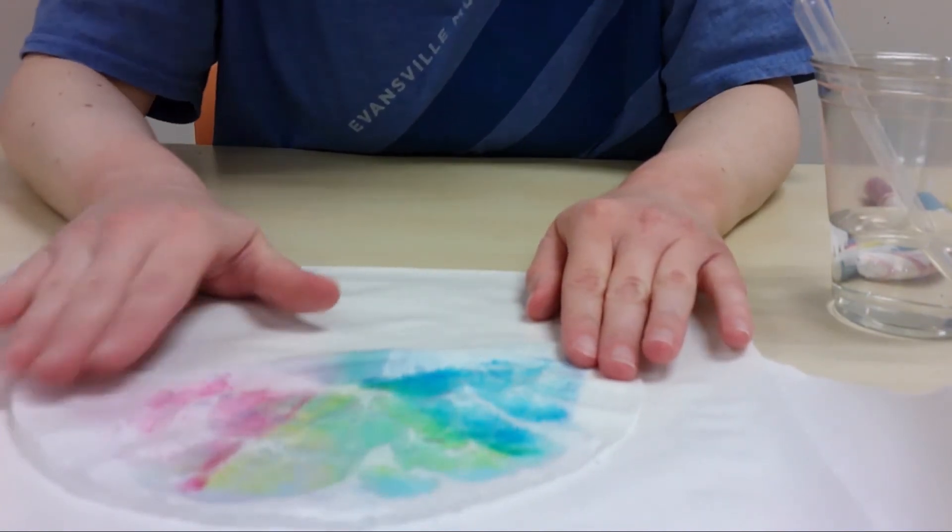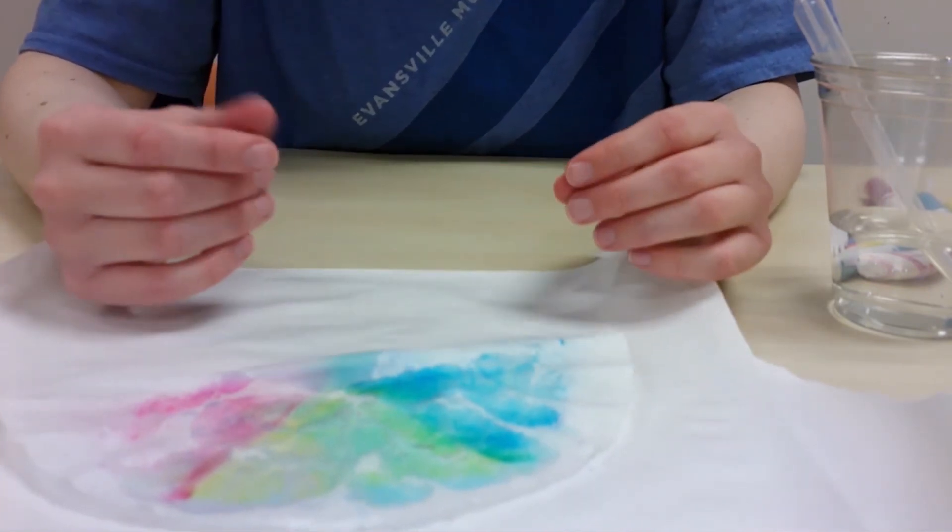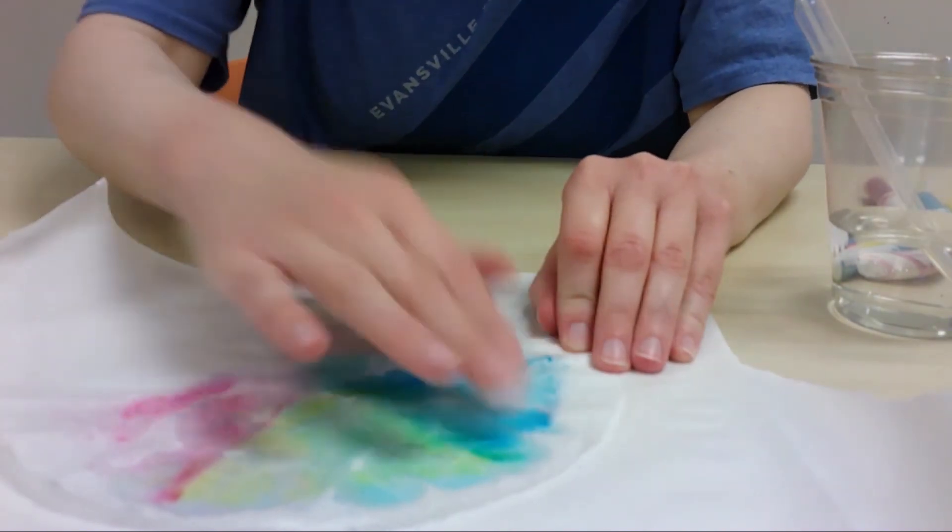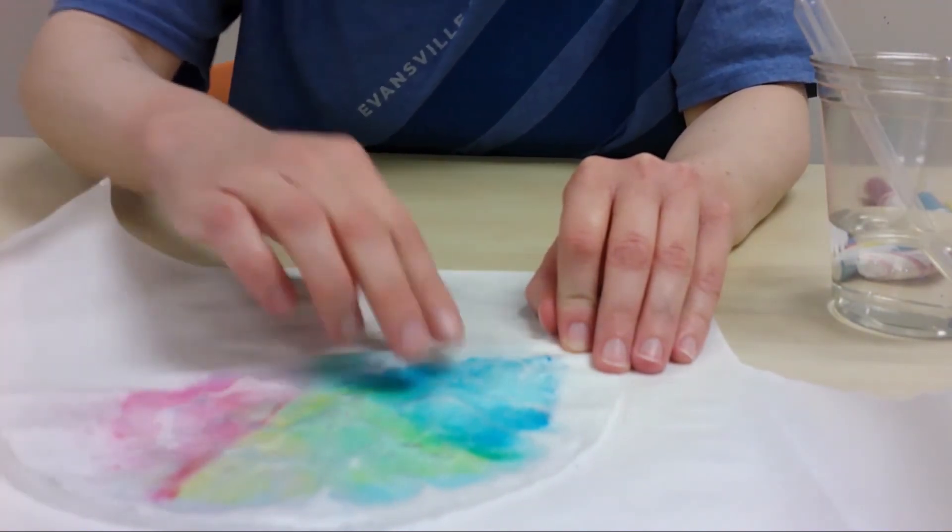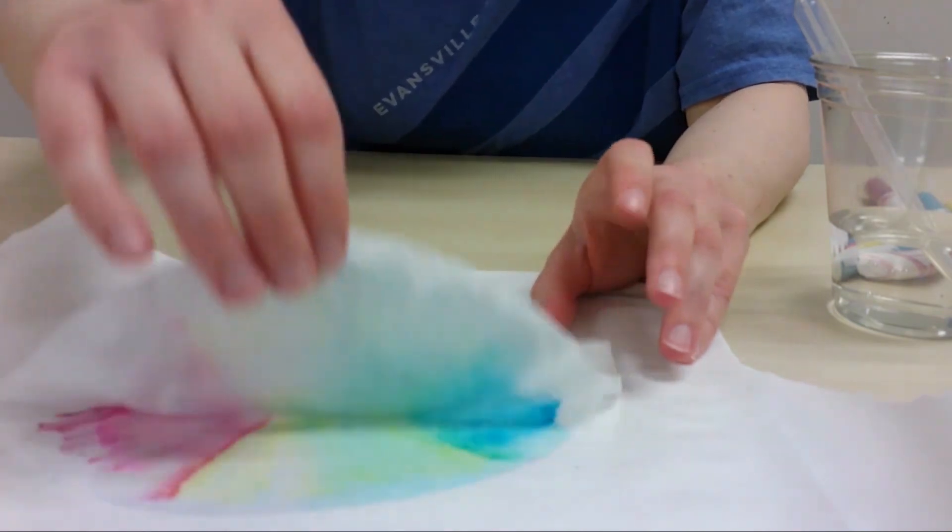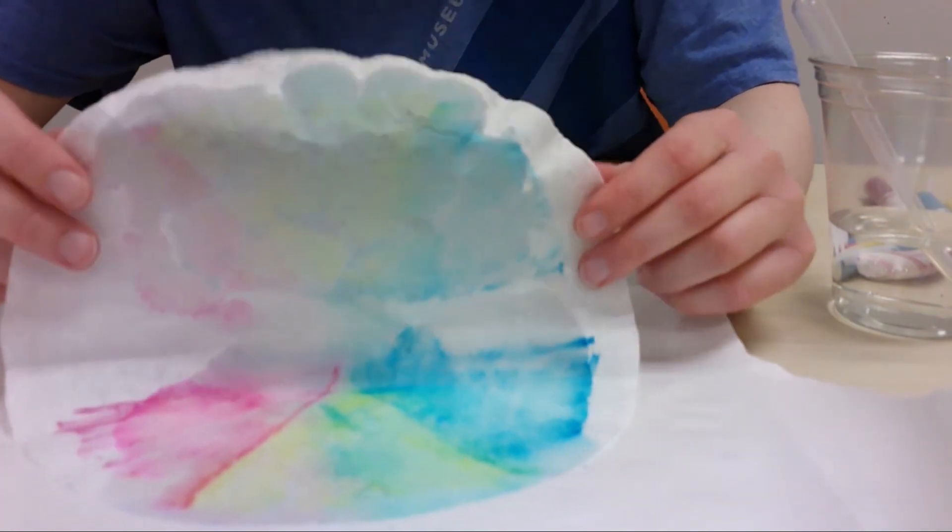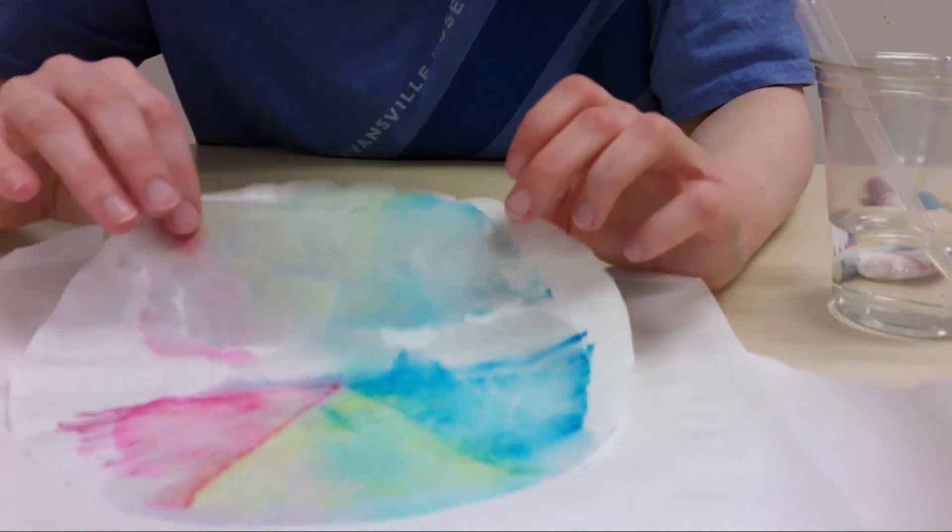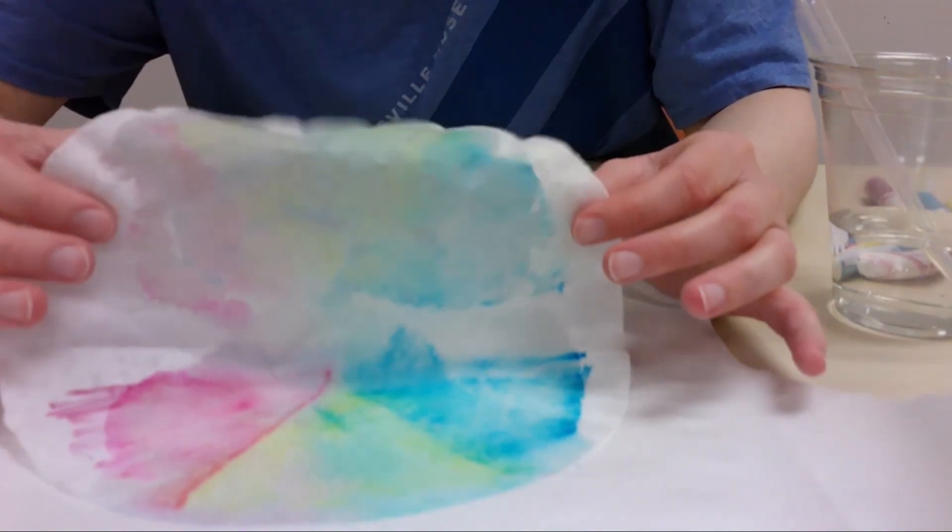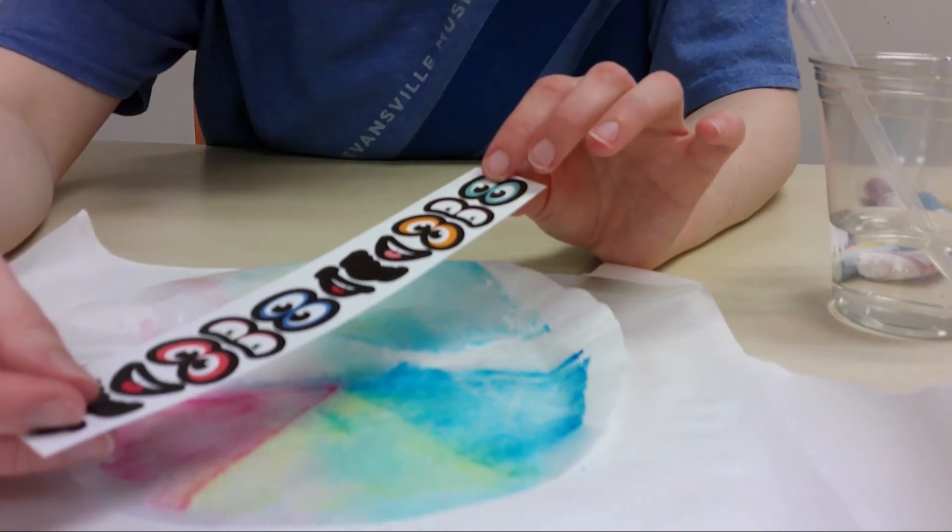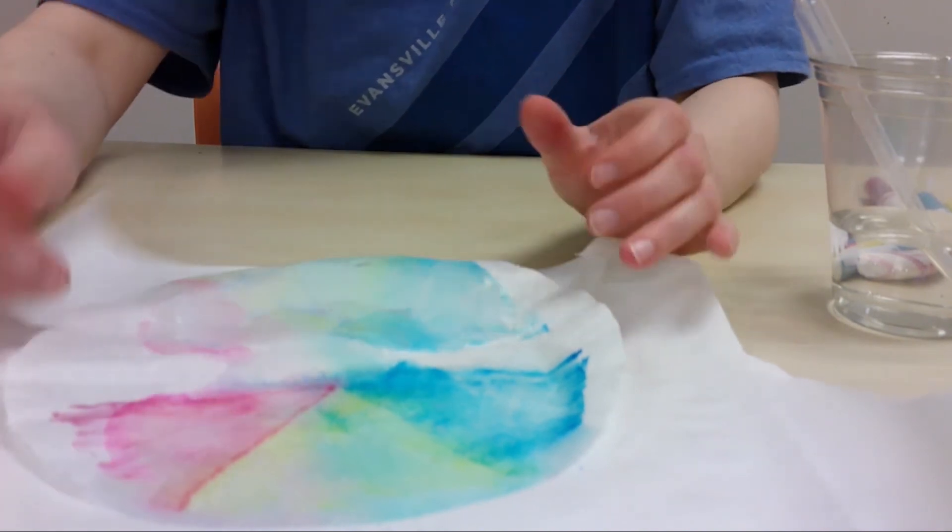So the fun thing about this activity is you get to experiment with patterns, and you can experiment with different colors and color mixing. Just be creative. They're also really fun to hang in your window when you're done. Oh, that came out pretty cool. So you can see the blues, the yellows, and the pinks. And once again, you can add some eyeballs, some smiley face, maybe a scary face because it's Halloween, whatever designs you like. And that's how you make your own colorful coffee filter monster.